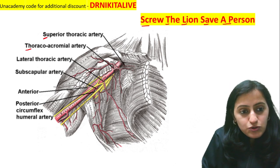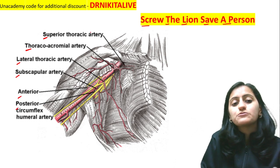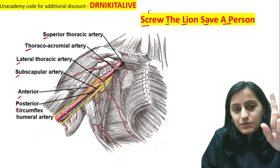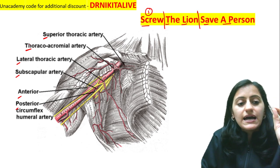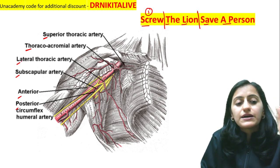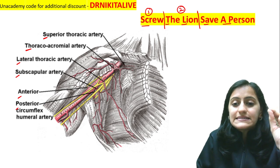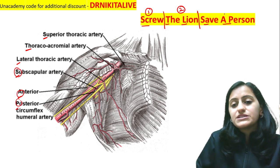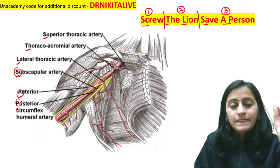Look at the branches mapped to the mnemonic: 'Screw' = Superior thoracic artery, branch of the first part. 'The' = Thoracoacromial artery, second part. 'Lion' = Lateral thoracic, second part. 'Save' = Subscapular, third part. 'A' = Anterior circumflex humeral, third part. 'Person' = Posterior circumflex humeral, third part.